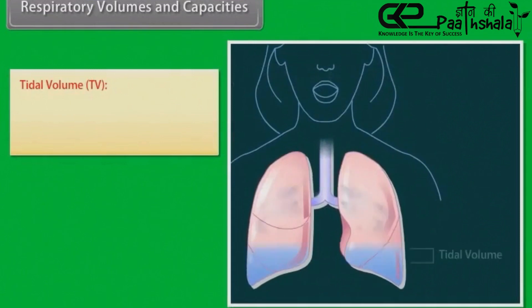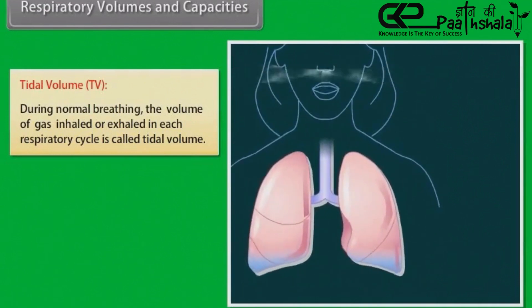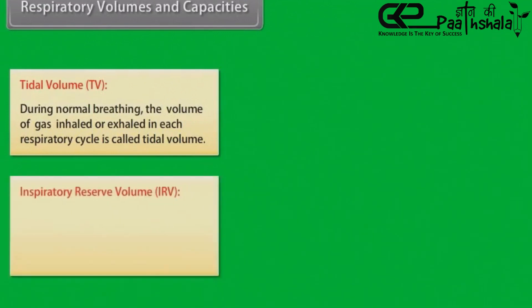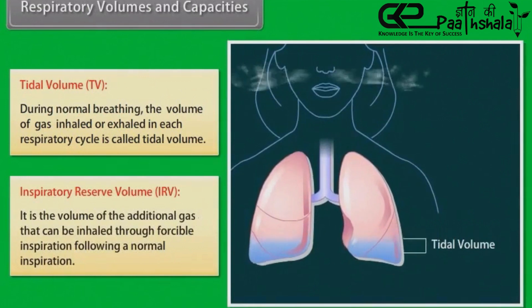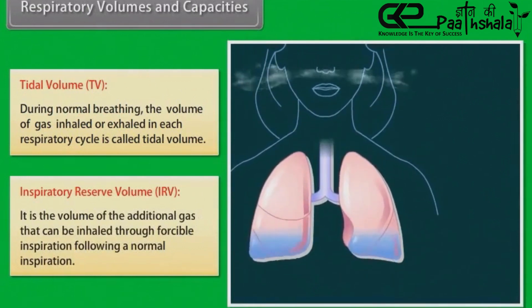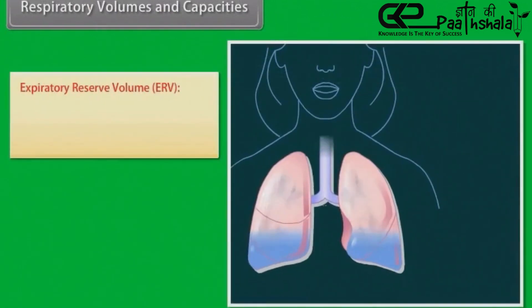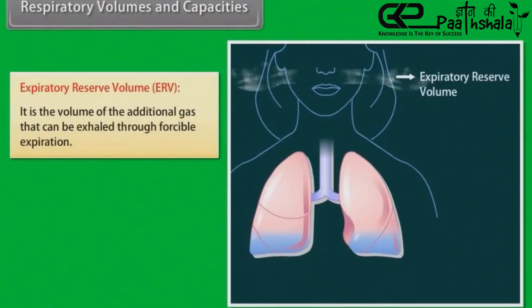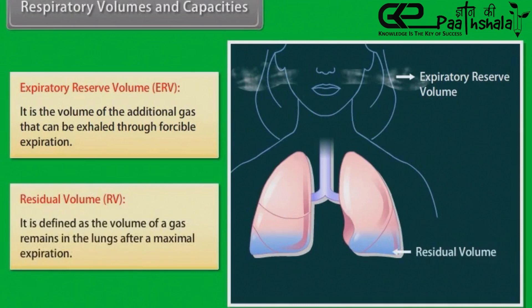Respiratory Volumes and Capacities. Tidal Volume (TV): During normal breathing, the volume of gas inhaled or exhaled in each respiratory cycle is called the tidal volume. Inspiratory Reserve Volume (IRV): It is the volume of additional gas that can be inhaled through forcible inspiration following a normal inspiration. Expiratory Reserve Volume (ERV): It is the volume of additional gas that can be exhaled through forcible expiration. Residual Volume (RV): It is the volume of gas that remains in the lungs after a maximal expiration.